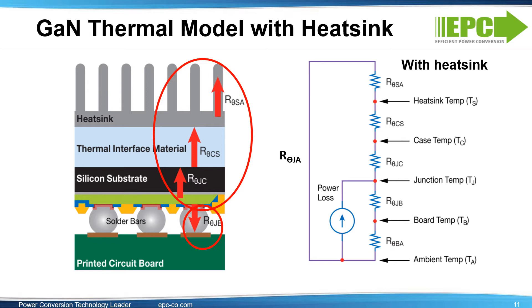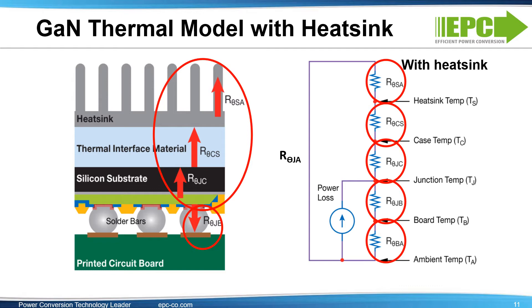Now let's look at the equivalent thermal model for this cross-section. When adding a heat sink to the system, we have the junction to case thermal resistance, or R-theta-JC, and the junction to board thermal resistance, or R-theta-JB, as well as the board to ambient thermal resistance, R-theta-BA. With the added heat sink, we have a case to heat sink resistance, R-theta-CS, and heat sink to ambient thermal resistance, or R-theta-SA. A good heat sink design will have a very low R-theta-SA.